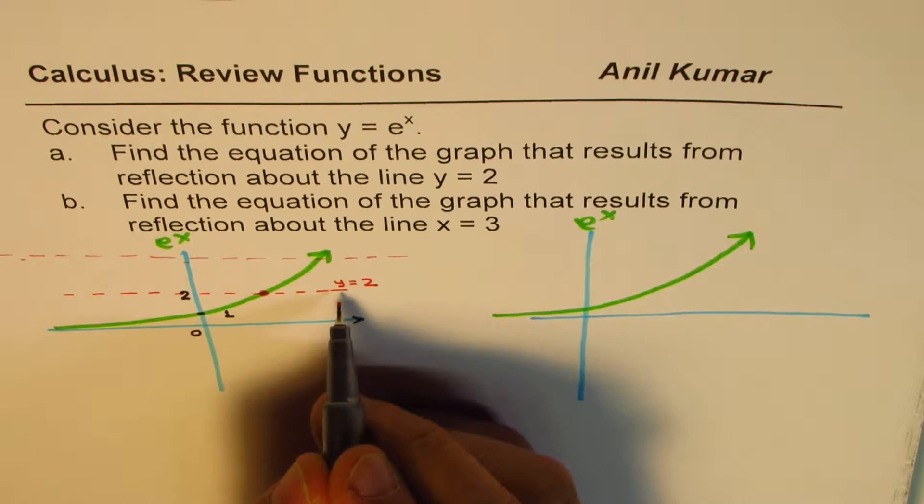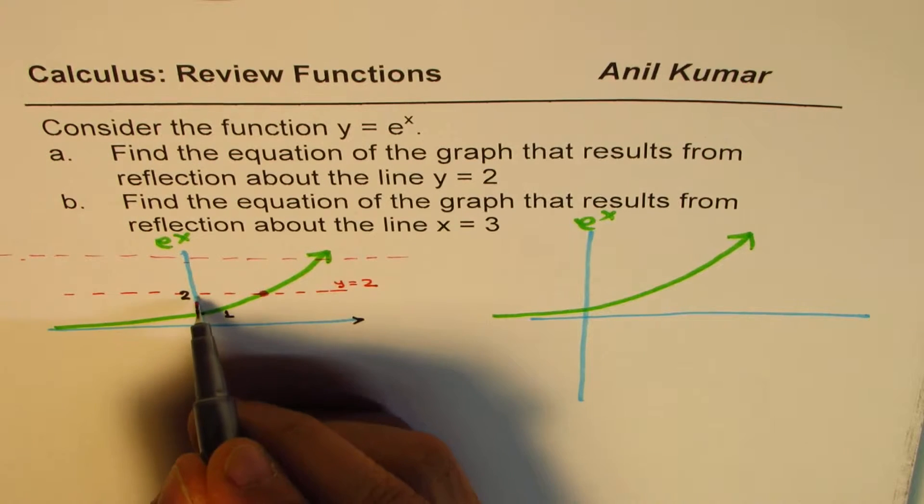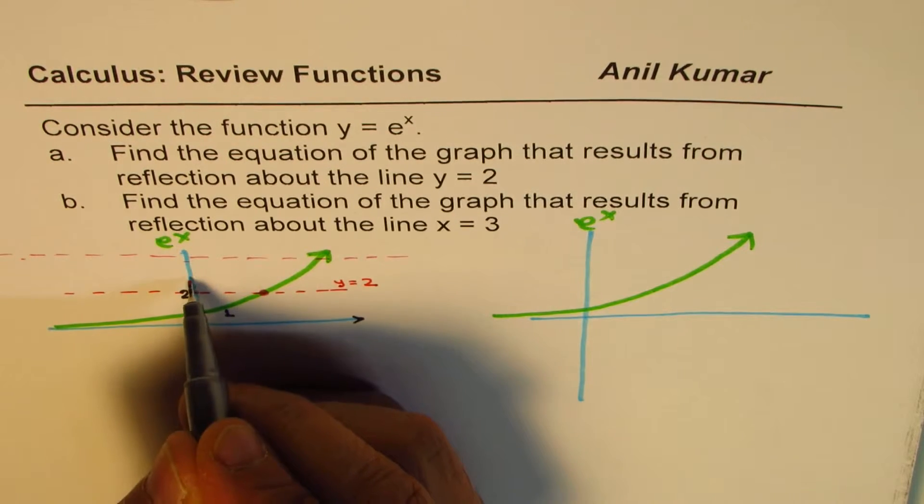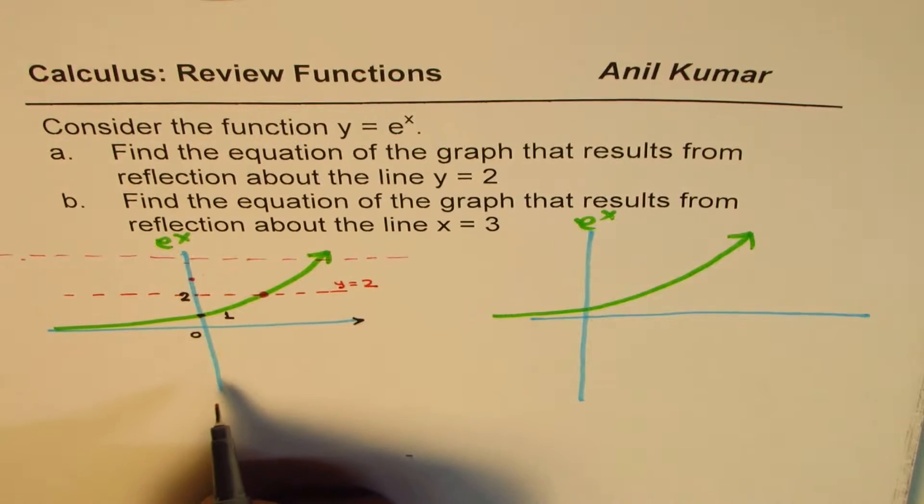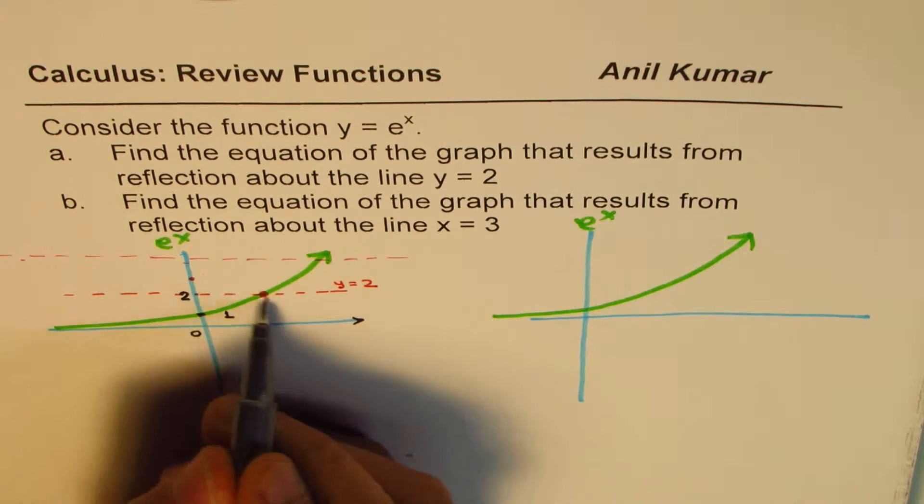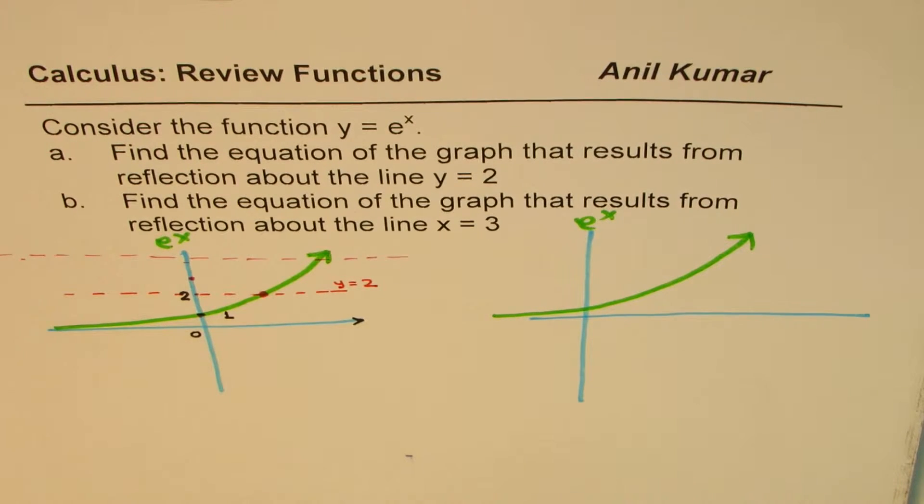This point, which is on y equals 2, is invariant, and this point, which is one distance away, will be reflected one distance away, so will be at 3. Now, these points are good for us to sketch the function.